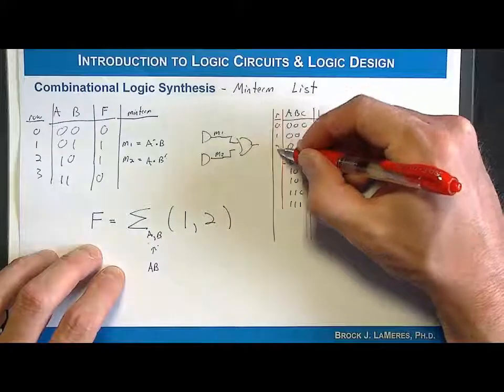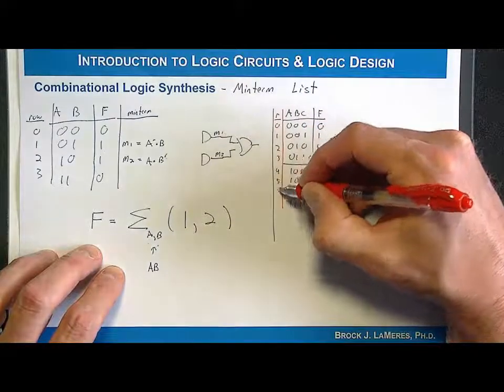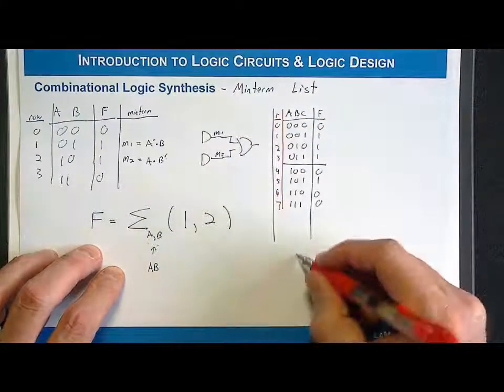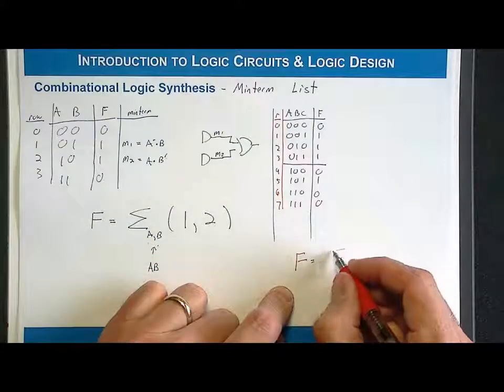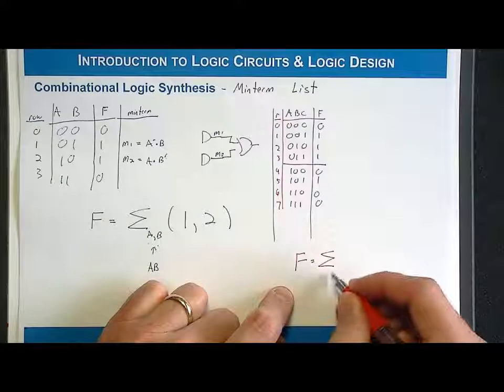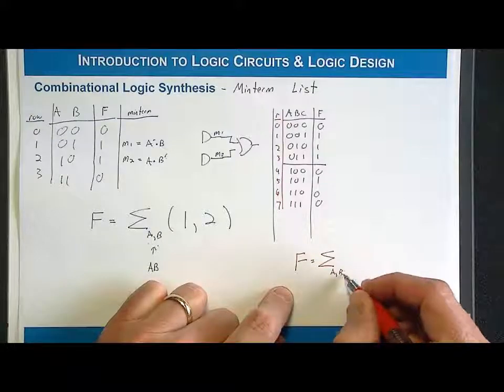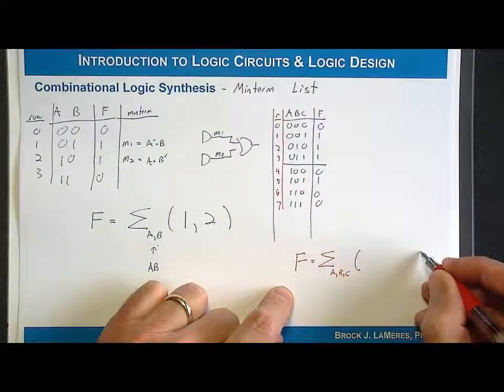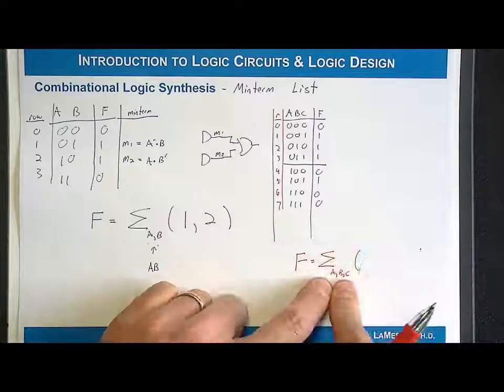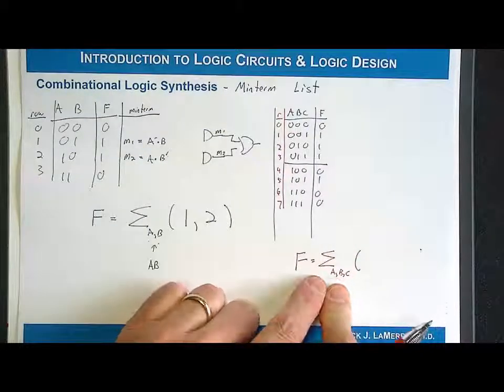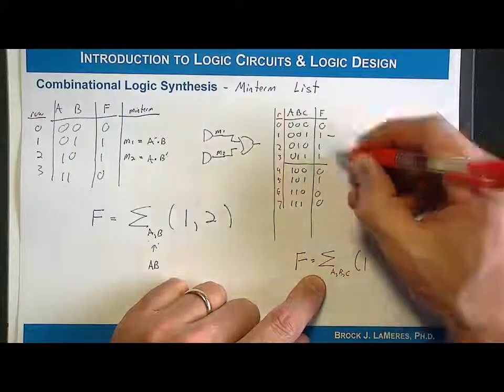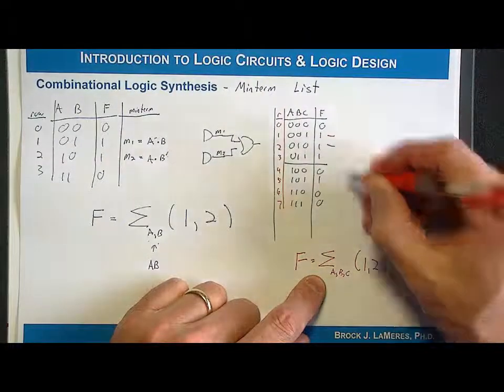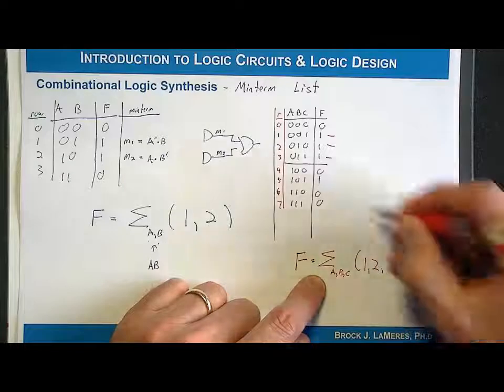I could write this equivalent functional description by saying F equals capital sigma subscript A, B, C. That tells me I have 3 input variables, and A is on the left in the truth table for the row notation. I list row 1, row 2, row 3, comma delimited, and row 5.